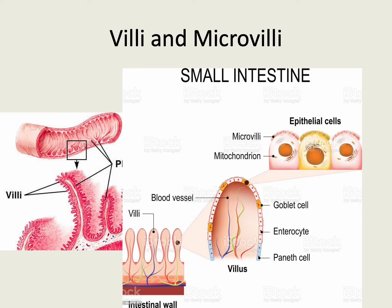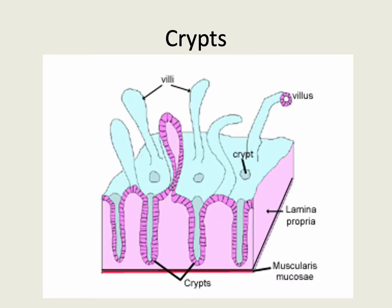These finger-like projections project into the lumen and they are called villi. Each villus is lined by cells called enterocytes, and on the luminal surface margins of the enterocytes, small hair-like projections are seen, called microvilli. In some places, the epithelium dips into the lamina propria and forms the crypts, whereas the villi are the projections that project into the lumen.